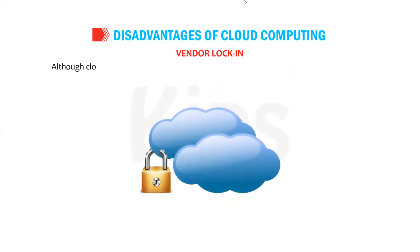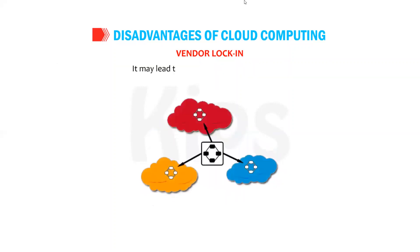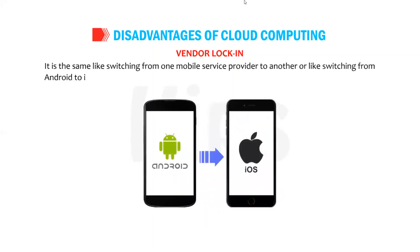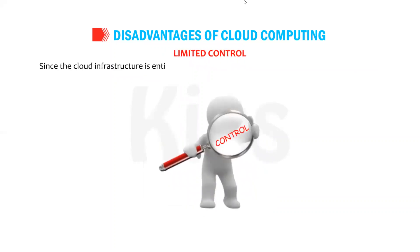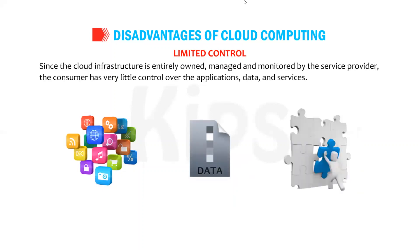The third disadvantage is vendor lock-in — although cloud service providers claim that the cloud will be flexible to use and integrate, switching from one cloud service to another is not simple. It may lead to portability and support issues, similar to switching from one mobile service provider to another or switching from Android to iOS. The fourth disadvantage is limited control — since the cloud infrastructure is entirely owned, managed, and monitored by the service provider, the consumer has very little control over the applications, data, and services.